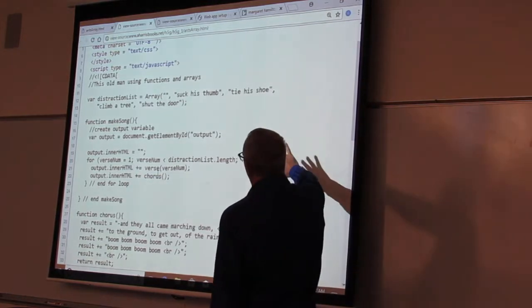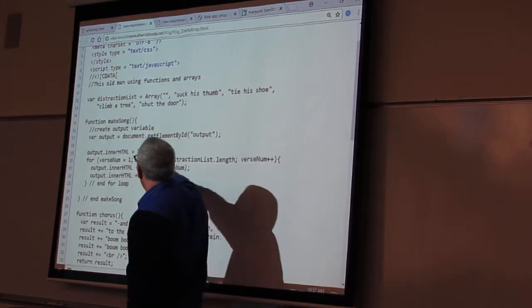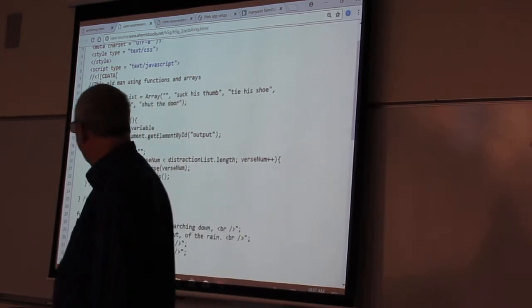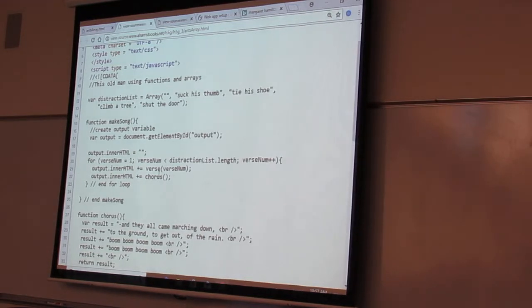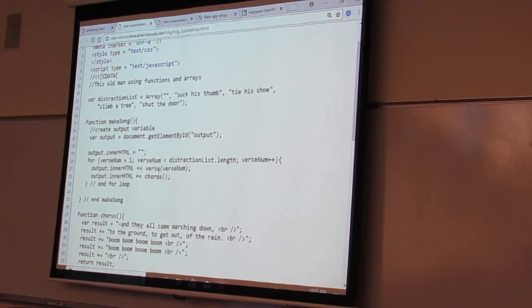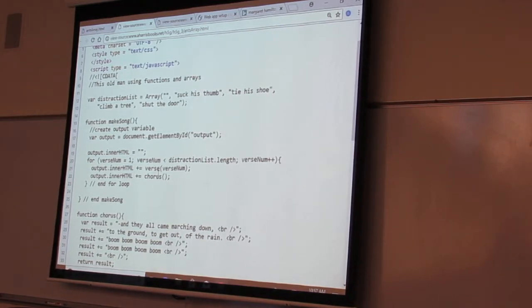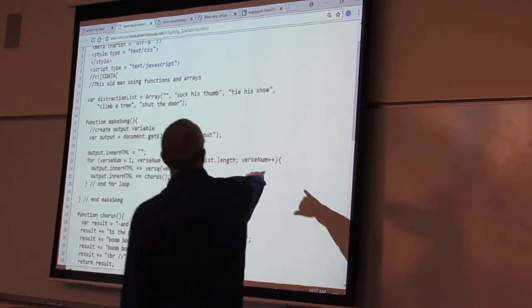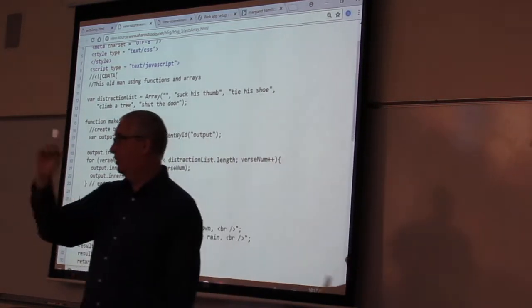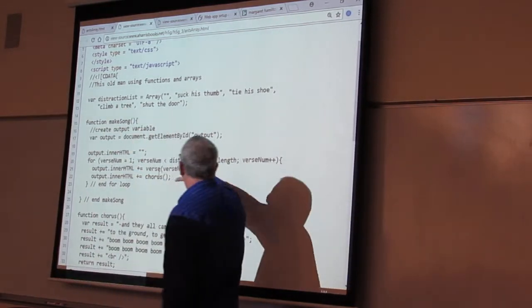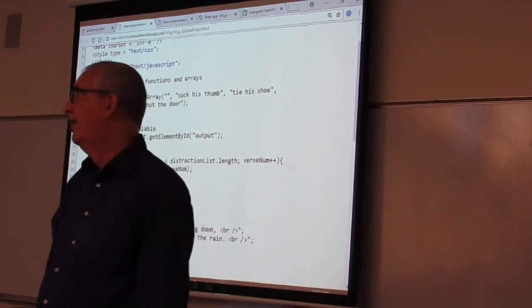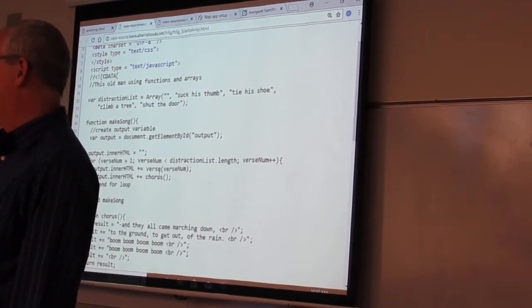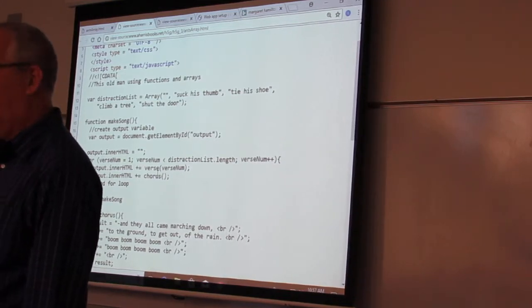Now take a look at makeSong. What's going on in line 20 that's interesting? The for loop steps through the array, like most for loops will do. The i++ - what does i++ do? Add one to verseNow. So verseNow is going to start at one and it's going to keep going until it's equal to or larger than the length of the list.